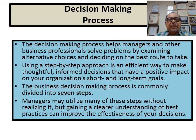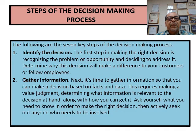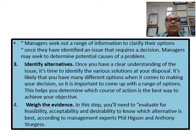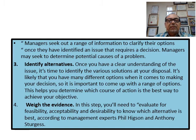The business decision making process is commonly divided into seven steps. Step one: identify the decision — recognize the problem or opportunity and decide to address it. Step two: gather information — get all the information needed, like gathering all 10 ingredients before cooking. Step three: identify alternatives — just as there are three roads to Kuala Lumpur, you have to consider which alternative to pursue, and present them in your meeting before deciding.